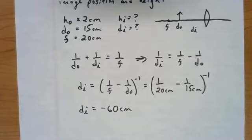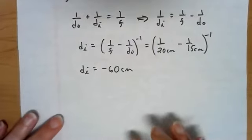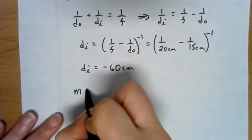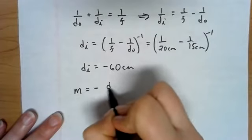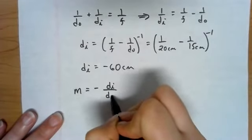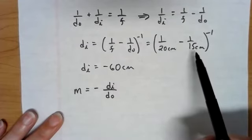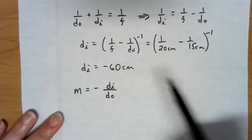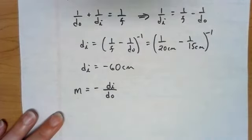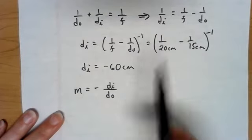That's far away. So DI is going to be way over here at negative 60 centimeters. That's crazy. So when we're looking for the height or the magnification, we are going to look at negative DI over DO. Since DI is significantly larger than DO, this is going to be much, much larger.